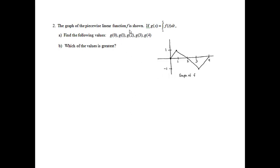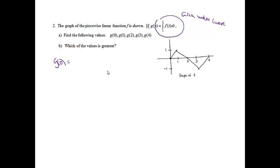Problem 2. The graph of the piecewise linear function f is shown. If g of x is equal to the integral from 1 to x of f, find the following values. This just means the area under the curve. To find g of 0, we plug in 0 for x, so we'll be finding the area under the curve from 1 to 0 of the f curve.